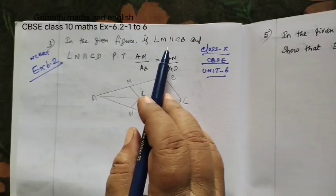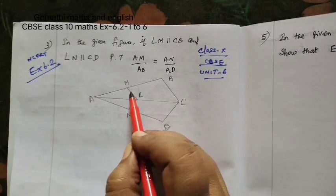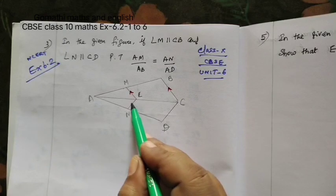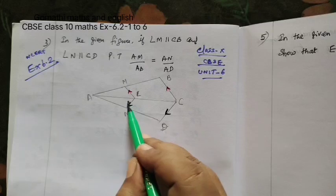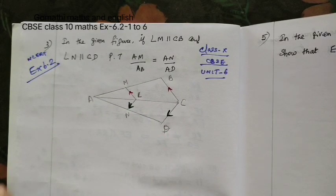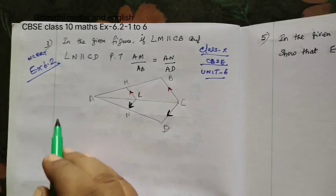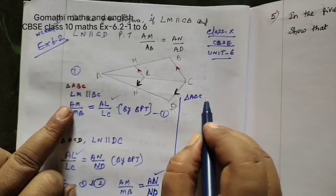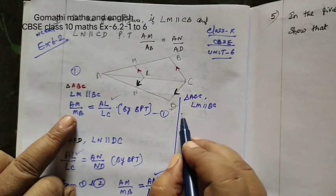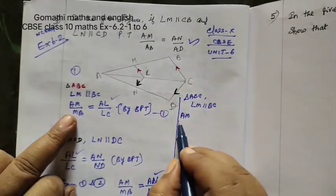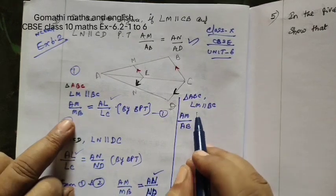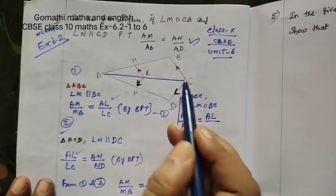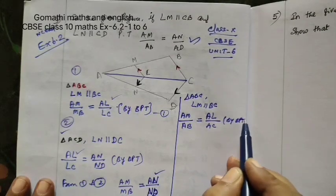In the given figure, if LM parallel to CB and LN parallel to CD. Now consider the triangle. This is triangle ABC, LM parallel to BC. So by BPT, AM by AB equal to AL by AC. AL by AC, reason by BPT.